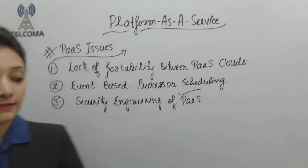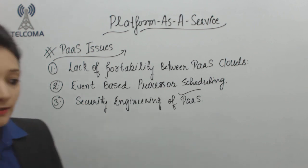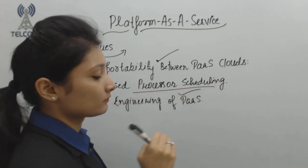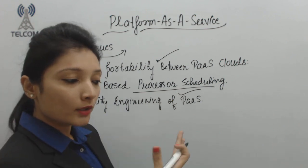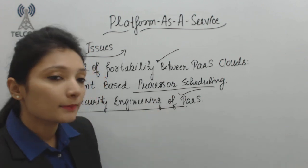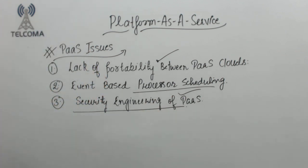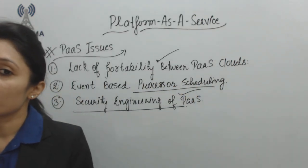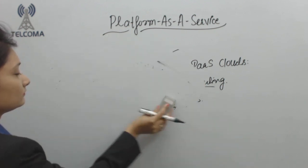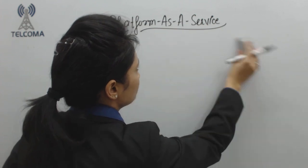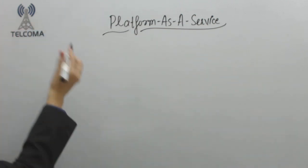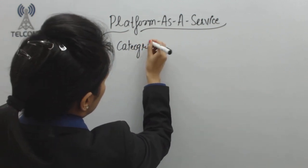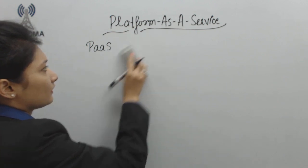So those are the issues associated with PaaS: interoperability issues between various PaaS clouds, event-based scheduling where events must be responded to in a specific time, and security parameters involving cryptographic techniques. Next, we have the various categories of the Platform as a Service model — we can simply refer to these as PaaS types.